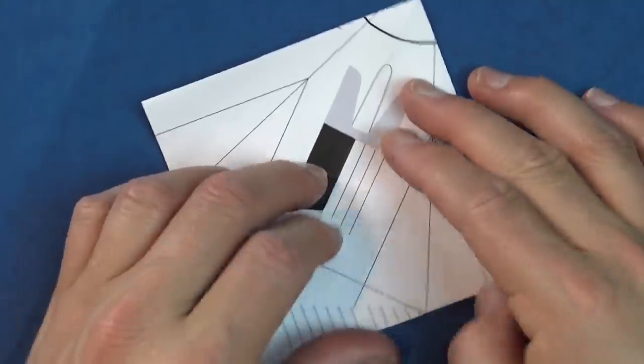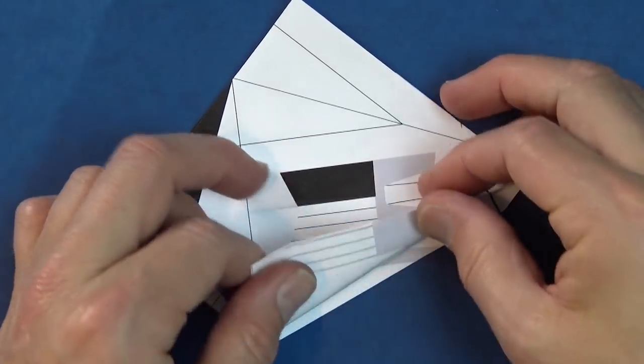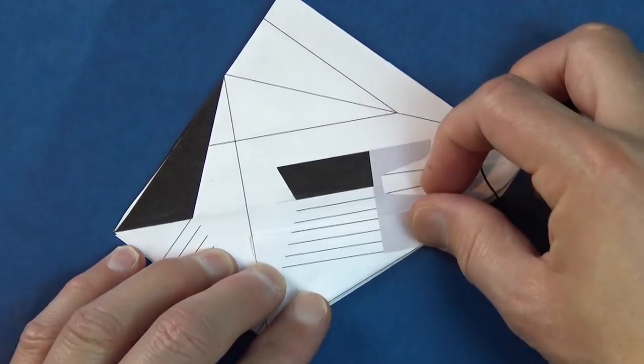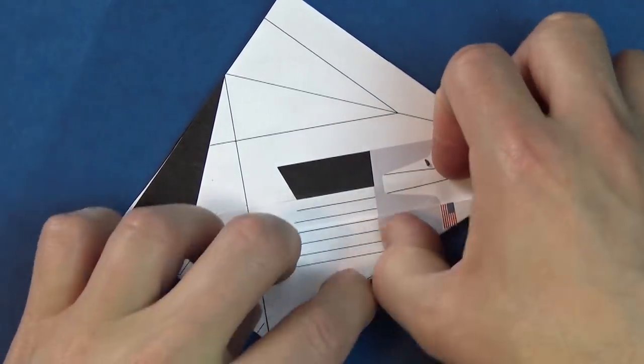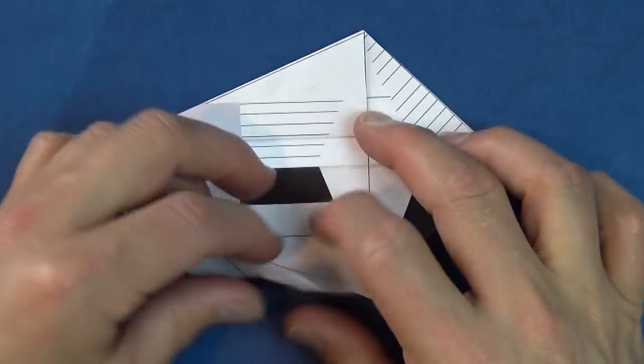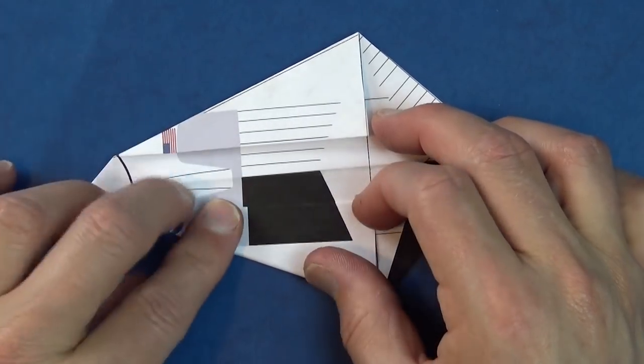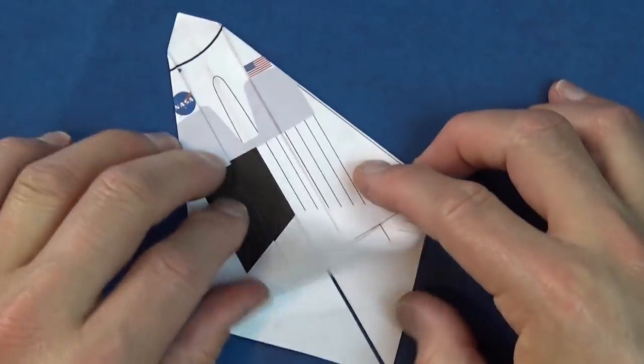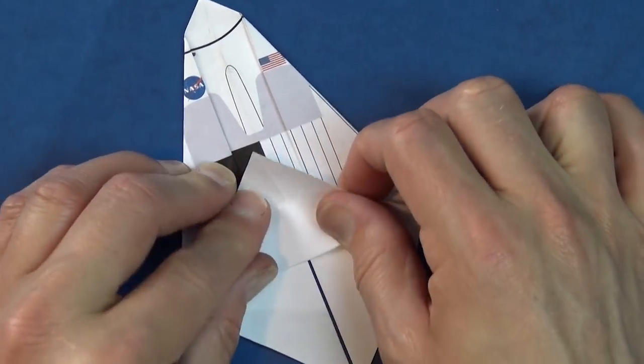And we're going to repeat that on the back side. So for this, it's a lot easier because you can just fold the flap up and align it with the rear edge. And repeat. And fold this up.